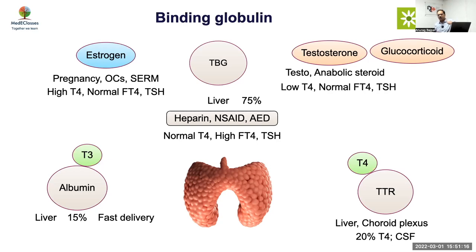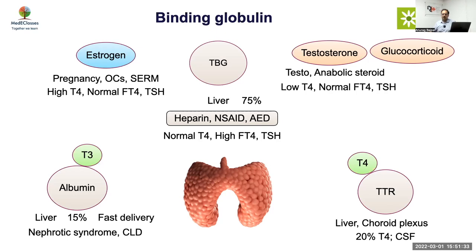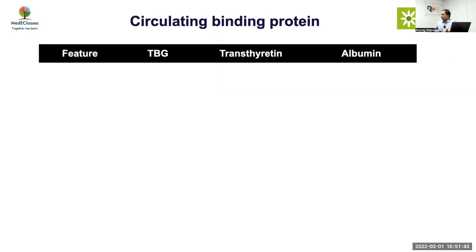In that situation you will have a strange result where everything is normal but free T4 is very high - that is something to be aware of. Conditions like nephrotic syndrome, liver disease, hypoalbuminemia, and malabsorption can also affect levels. We saw recently an elderly gentleman with liver disease who had hyponatremia and whose T4 and T3 were very low with normal TSH - you might think of central hypothyroidism, but this is actually an albumin deficiency.